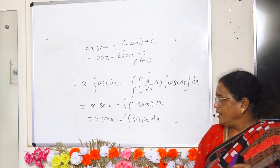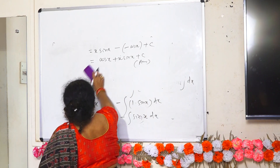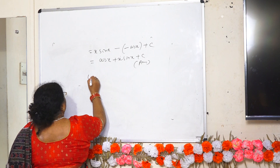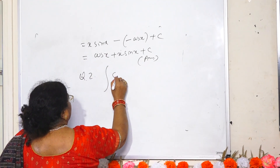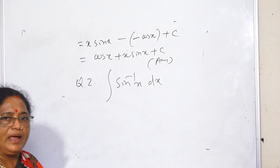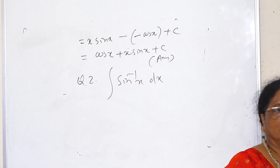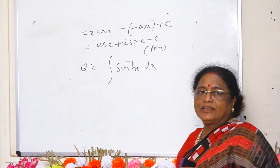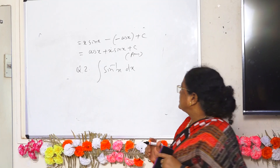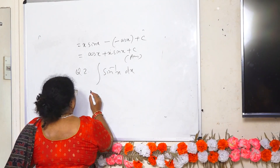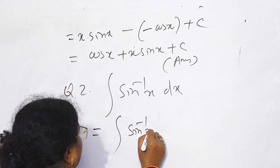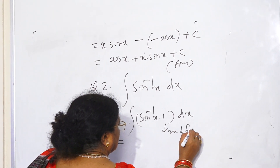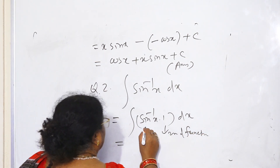Next question: integrate sin inverse x with respect to x. Here in the integrand we have only one factor. Therefore, we multiply by 1, taking 1 as the second factor. So this can be written as sin⁻¹x into 1 dx, where sin⁻¹x is the first function and 1 is the second function.